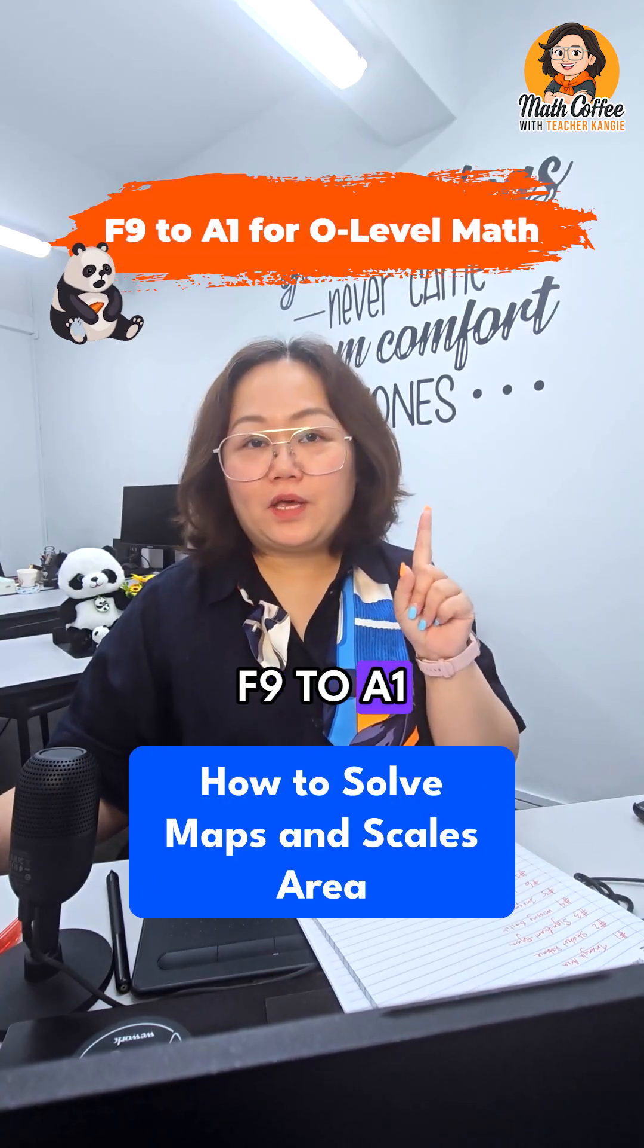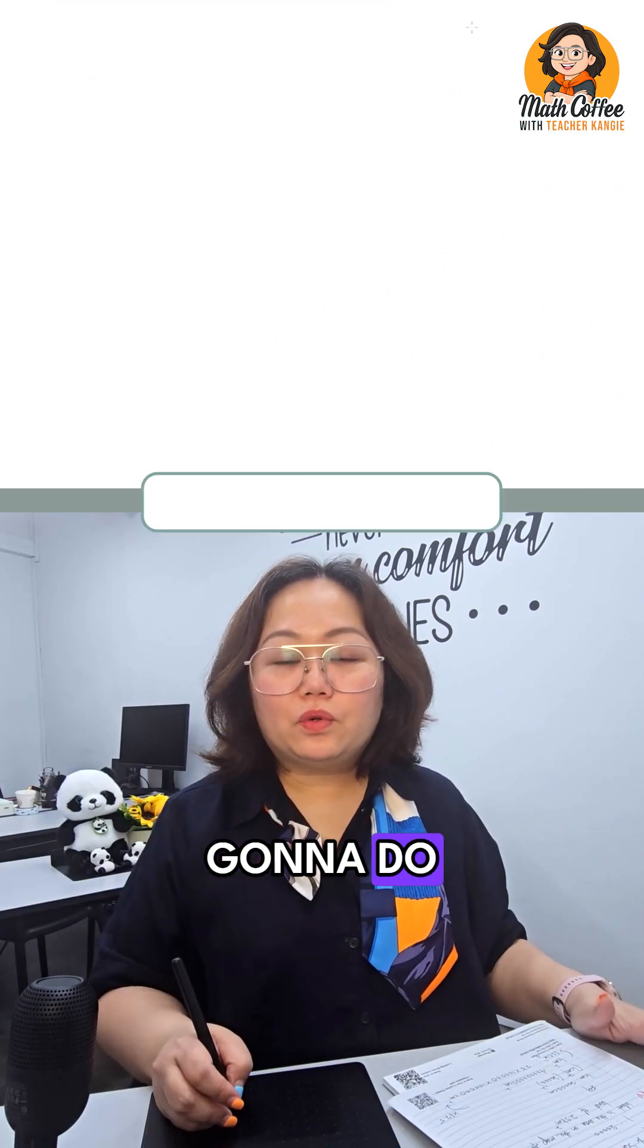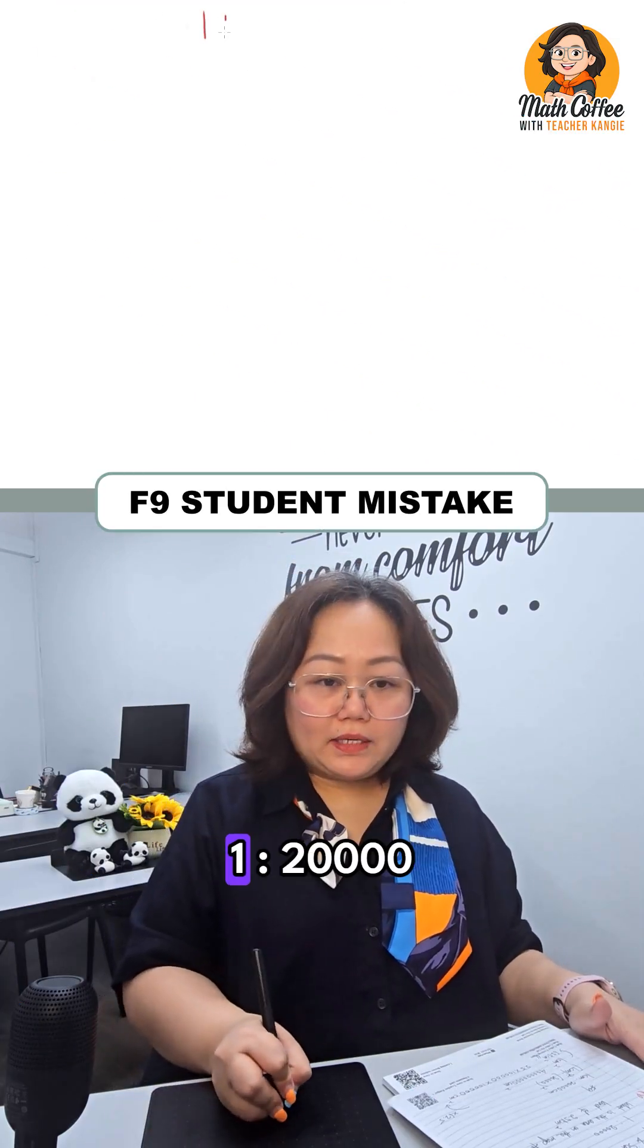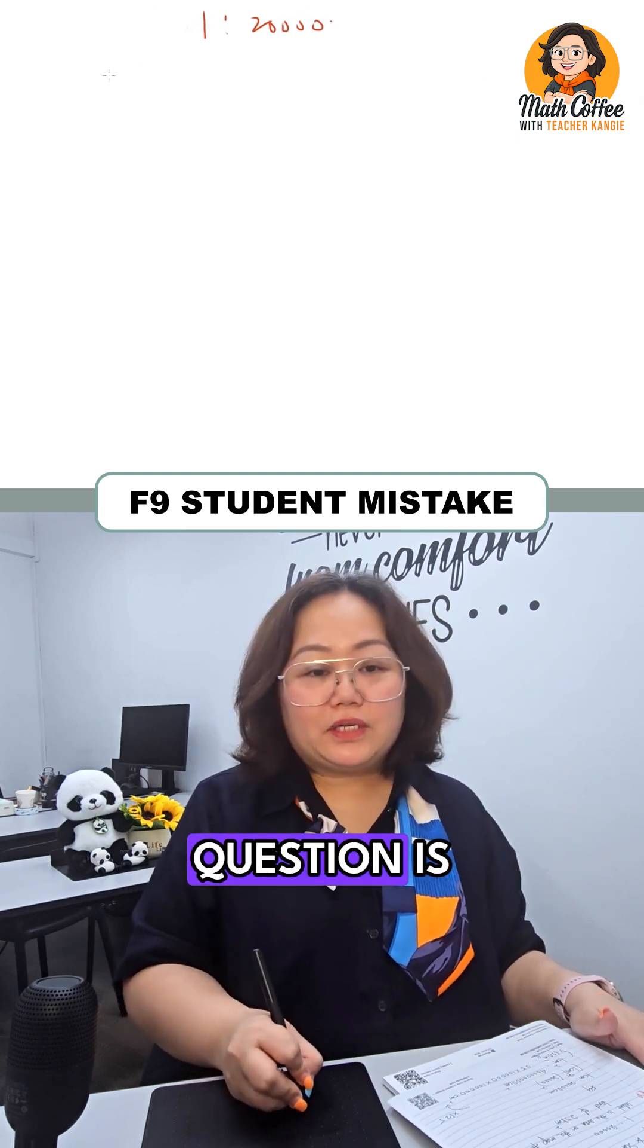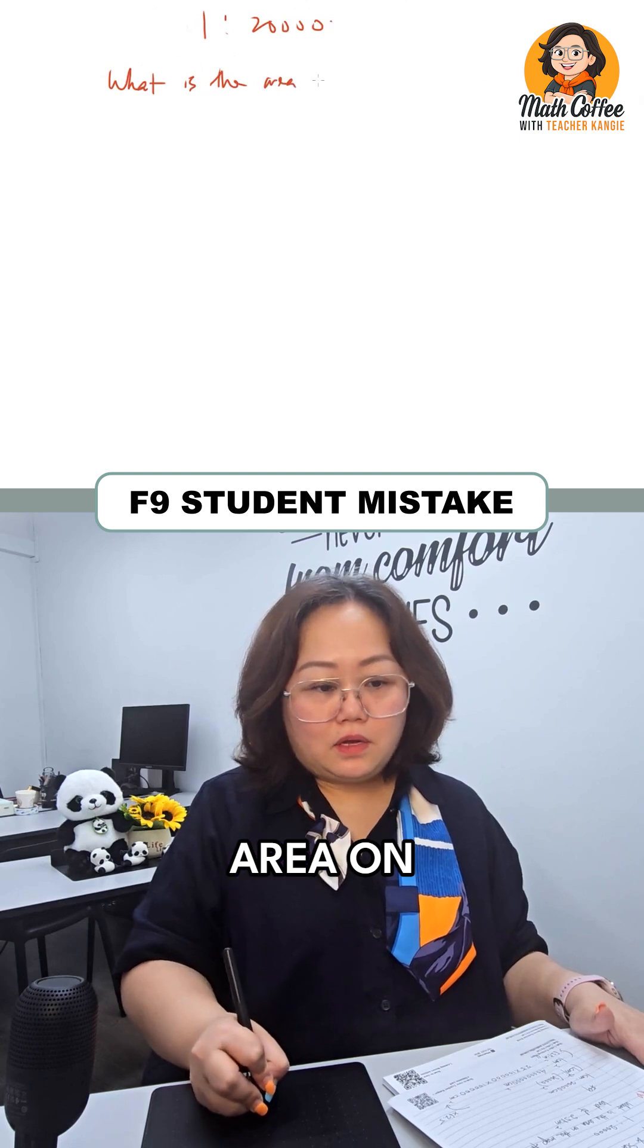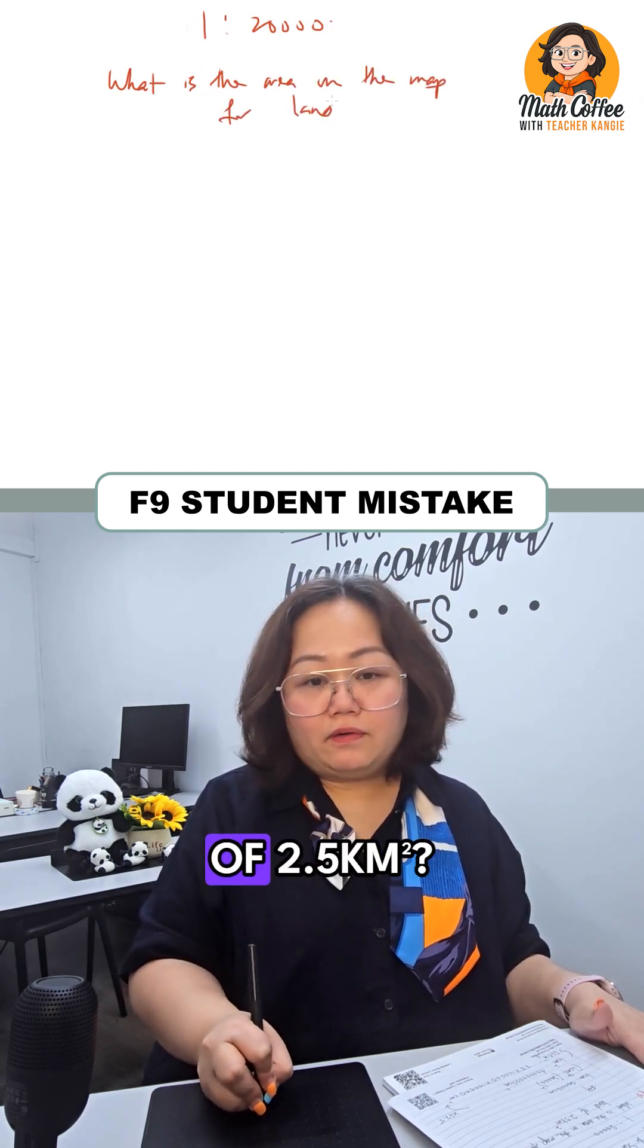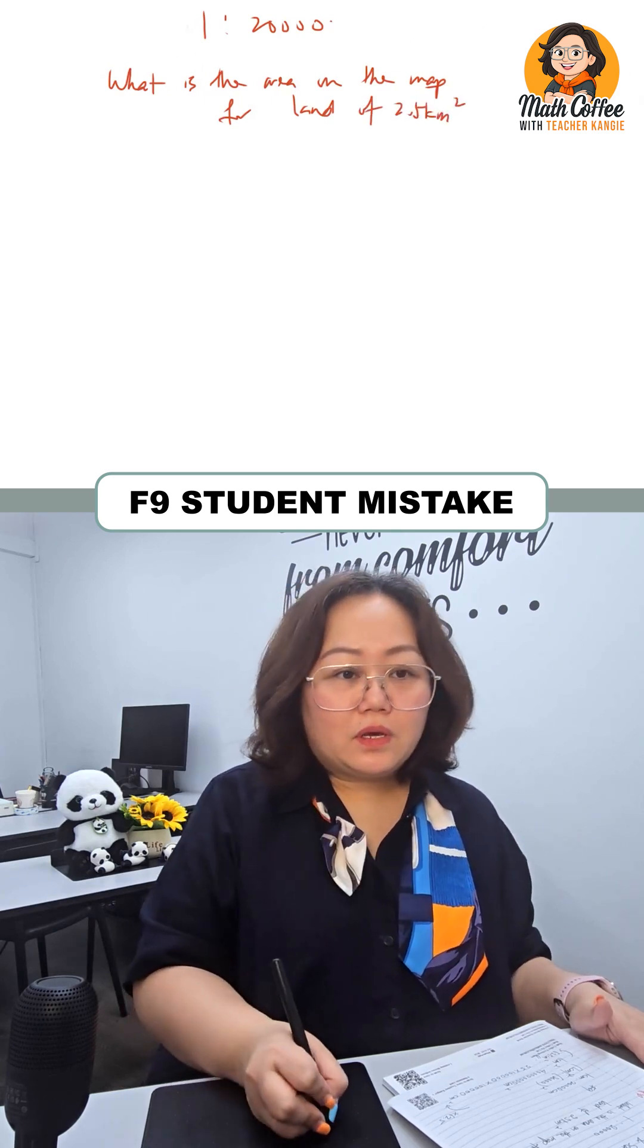Here's how I can get from F9 to A1 in Maps and Scales Area. We're going to do a Maps and Scales Area question. So we have 1 is to 20,000, and the question is, what is the area on the map for a length of 2.5 km squared?